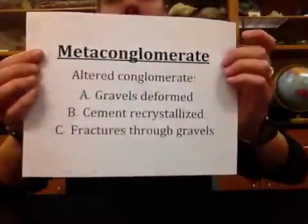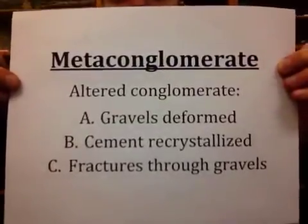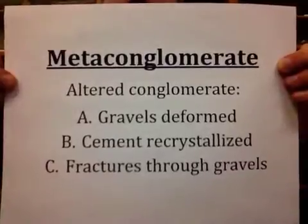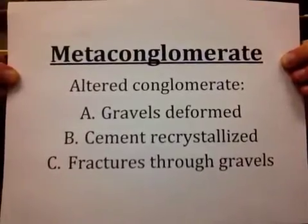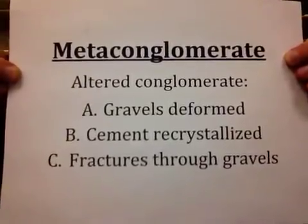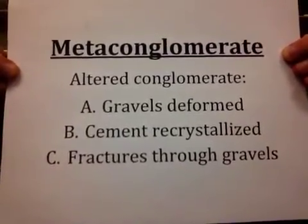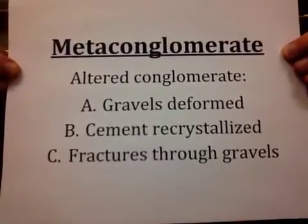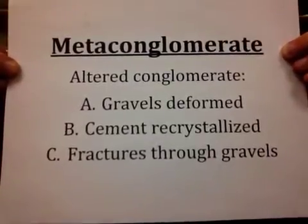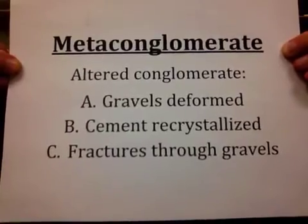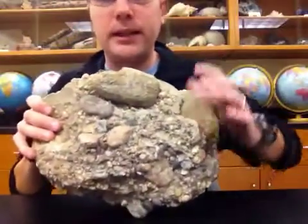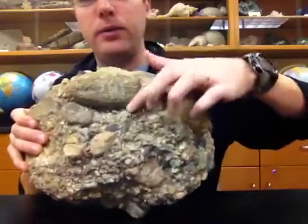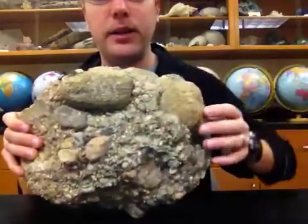The last non-foliated metamorphic rock we will look at at the introductory level is metaconglomerate. As the name gives away, metaconglomerate is altered conglomerate. Typically, the gravels have been deformed — they're flattened and become oval-shaped — and the cement or matrix surrounding the gravels is typically weaker, so it has recrystallized to make a much stronger rock as a whole. The gravels are typically fractured through, rather than — as in the protolith conglomerate — breaking around the gravels. Looking at the protolith conglomerate, the gravels are protruding and not broken through; it would be more likely to break around them because of the weaker cement or matrix surrounding them.